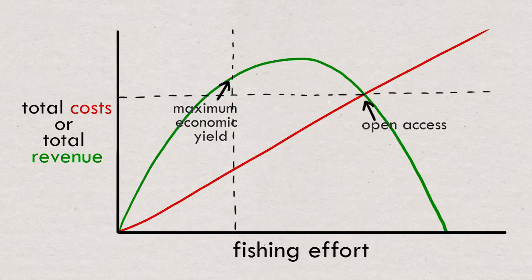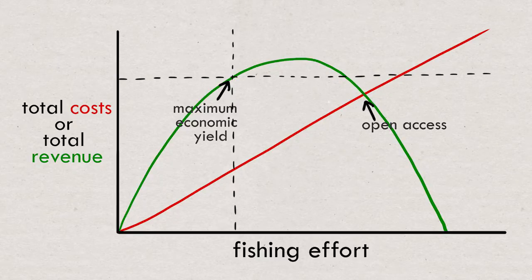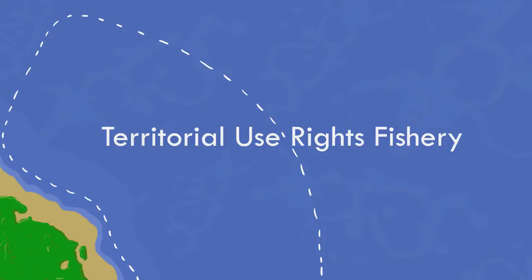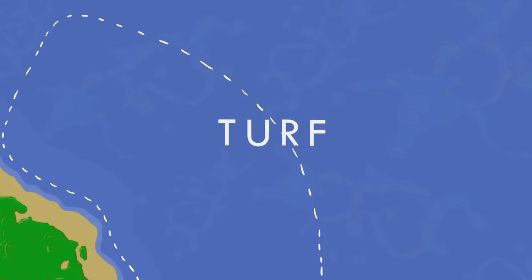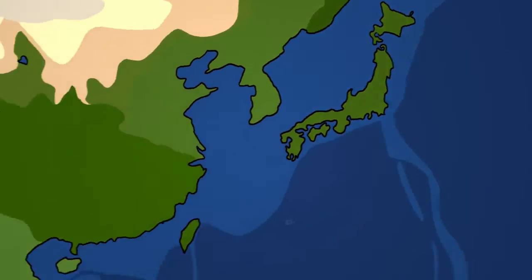They end up putting in less effort, the ecosystem ends up healthier, and the fishermen make more money because they're responsive to the health of the fish. They will end up fishing at the maximum economic yield. This is the idea of setting up territorial use rights, or TERFs for short. There's lots of examples of these TERF systems all over the world.